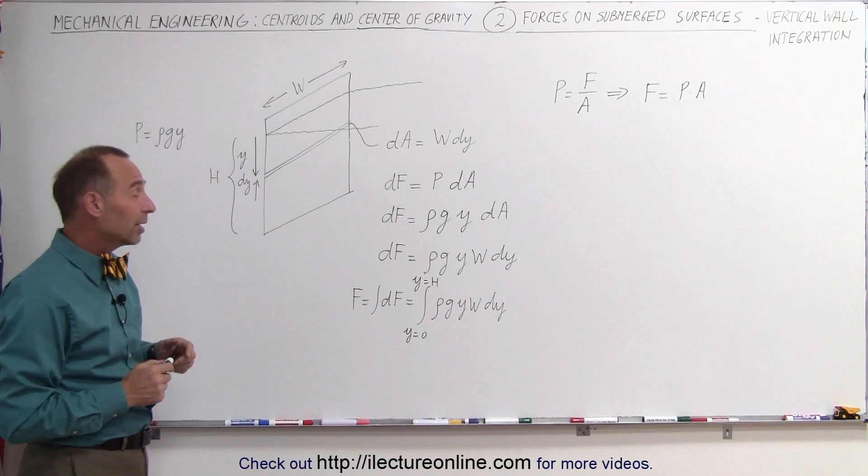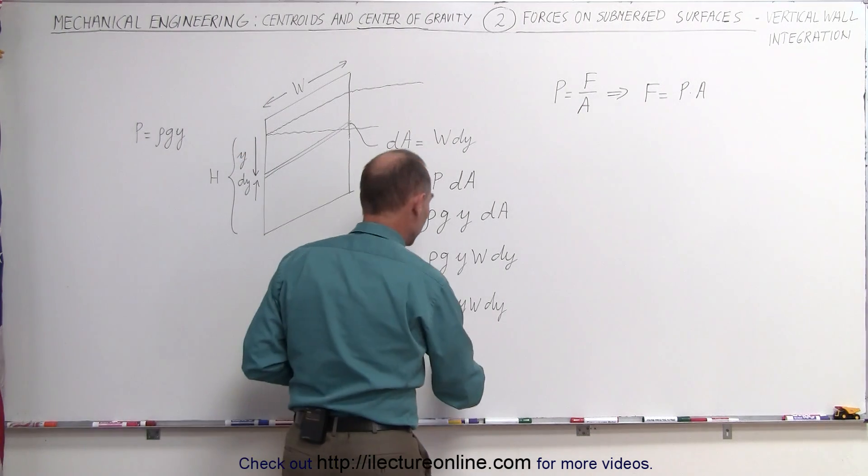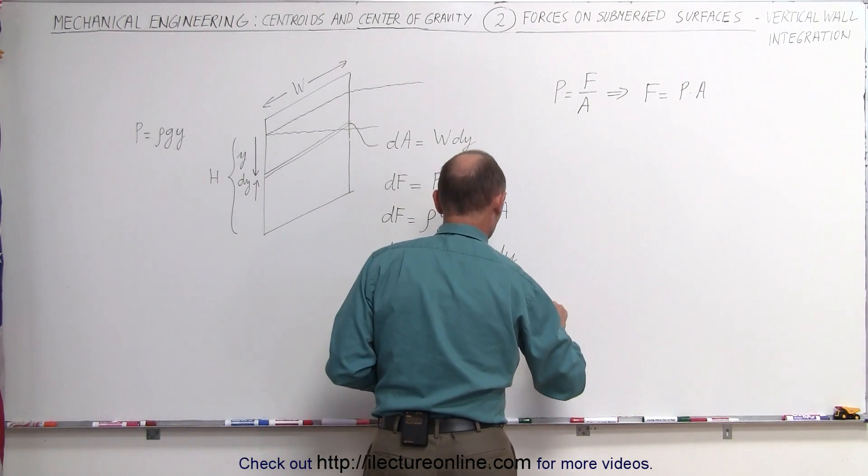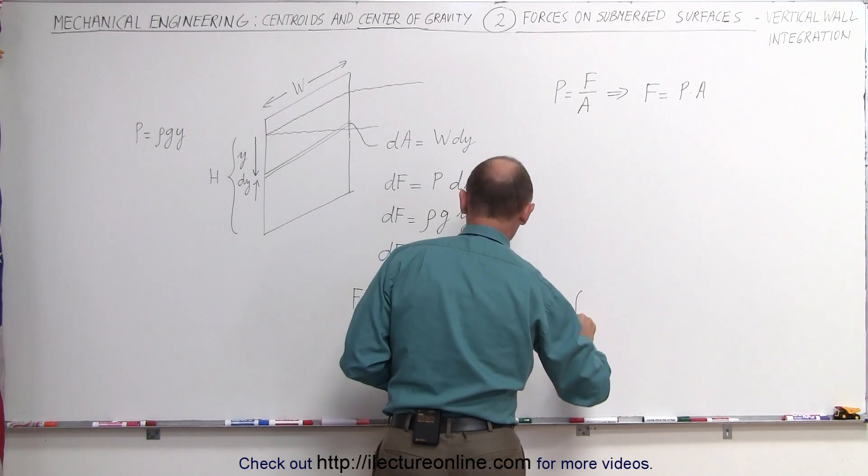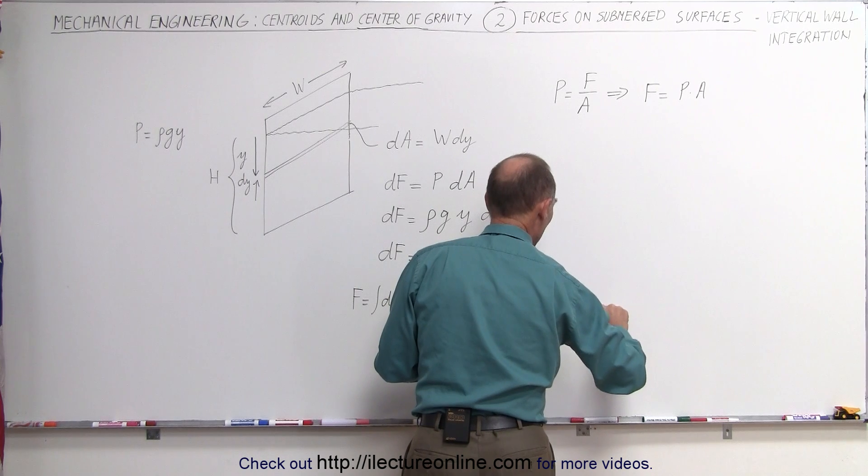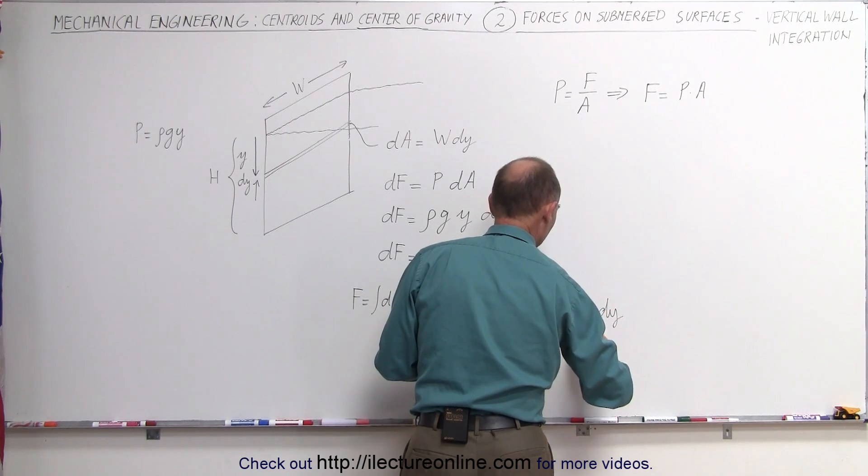Whatever is constant come out of the integral sign. ρ, g, and w are constant, so this can now be written as the density times g times the width of the pool times the integral of y dy, from y equals zero to h. That's an easy integral.